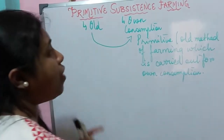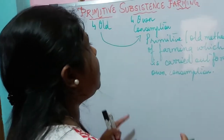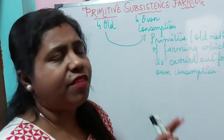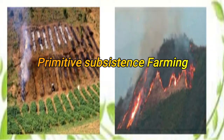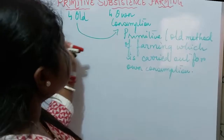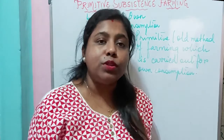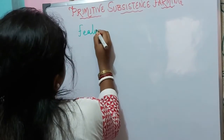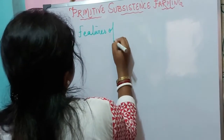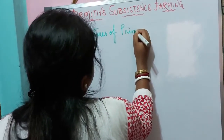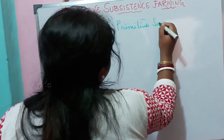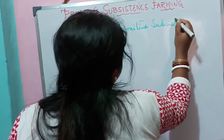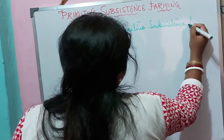This type of farming is practiced from the time when people led a very simple life and they used to do cultivation with traditional tools and techniques. So this is referred to as primitive subsistence farming. Now let us know the features of primitive subsistence farming.